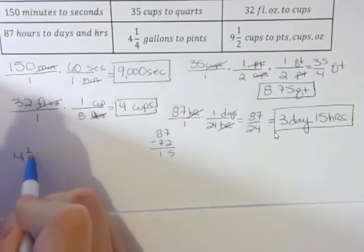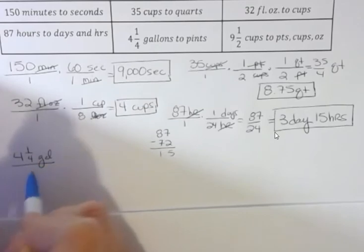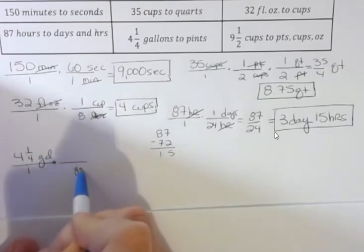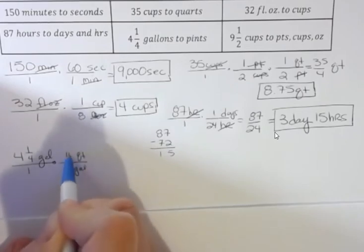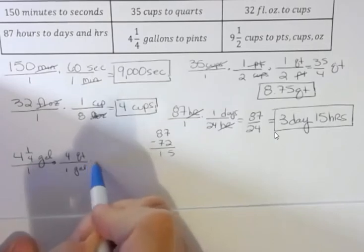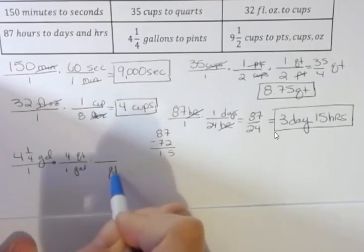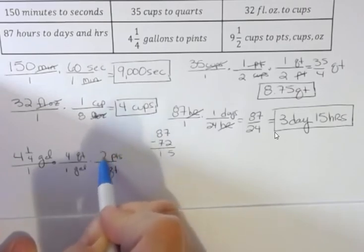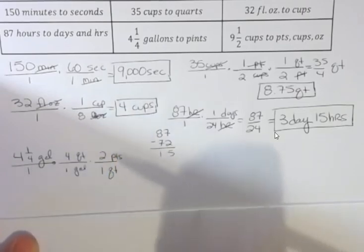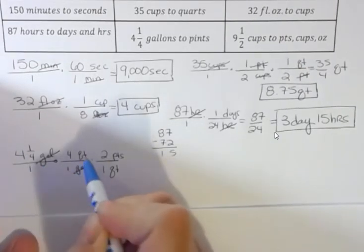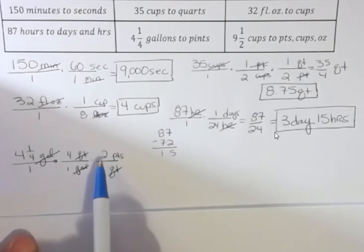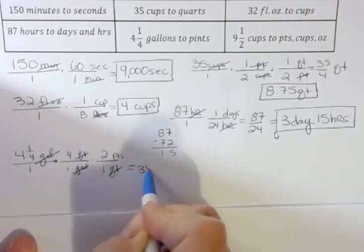Next, four and a half gallons to pints. There's no direct conversion, so I'll do this in two steps. First I get rid of gallons and go to quarts — there are four quarts in one gallon. Then I get rid of quarts and go to pints — there are two pints in one quart. The gallons and quarts cancel, leaving pints. Four and a half times four times two gives me 36 pints.